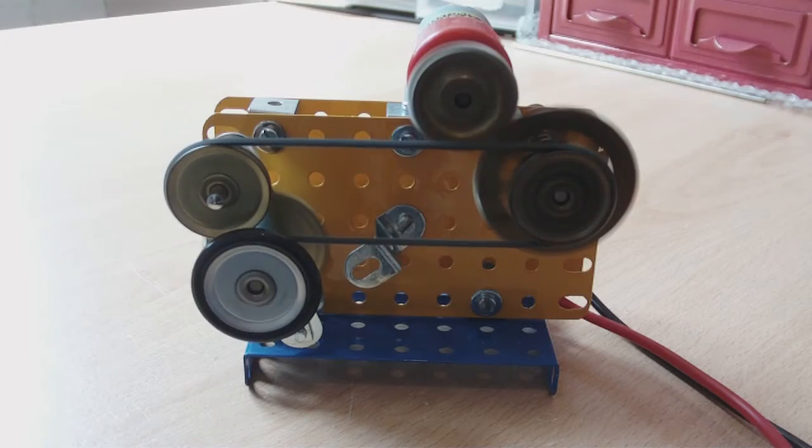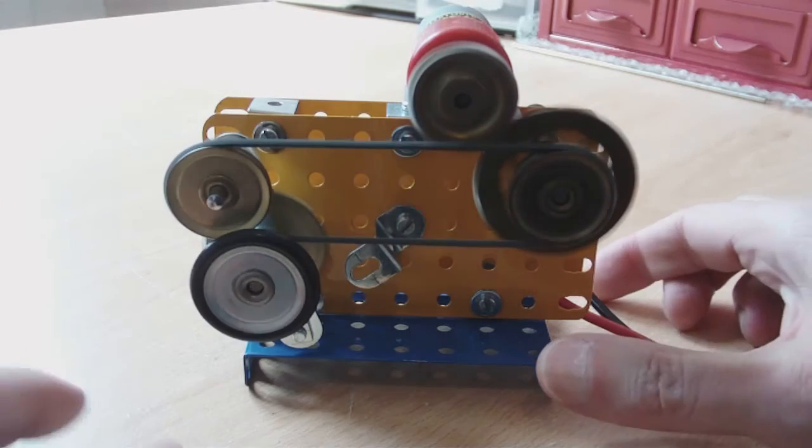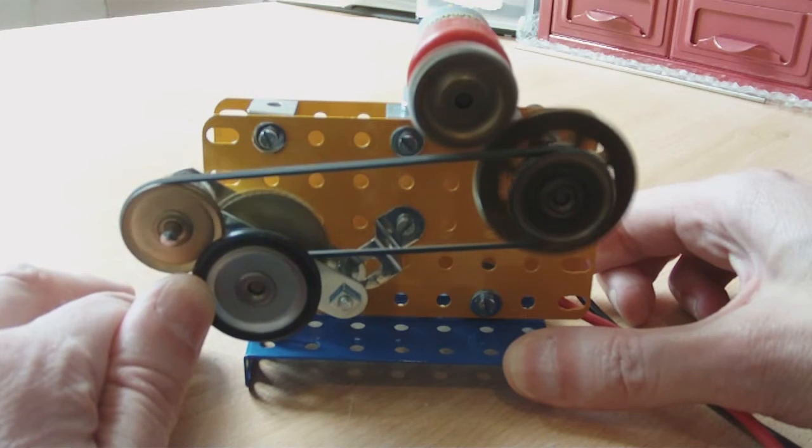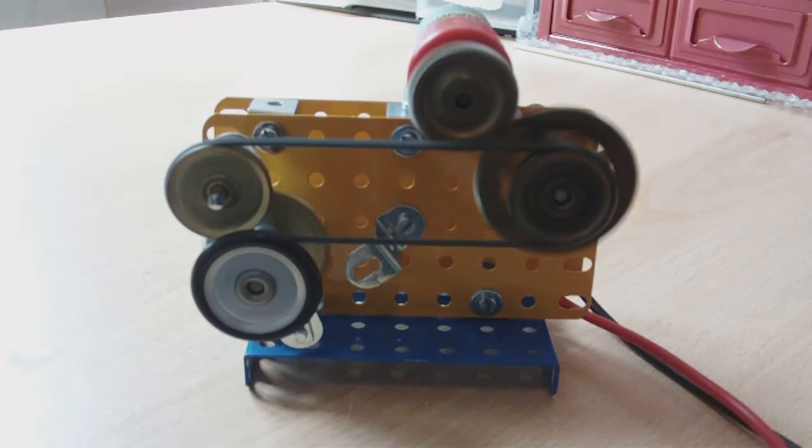An automatic belt tensioning mechanism is easiest just to demonstrate. This is the output, and if I put load on it, the belt automatically stretches and increases its tension.